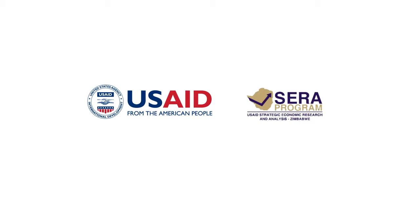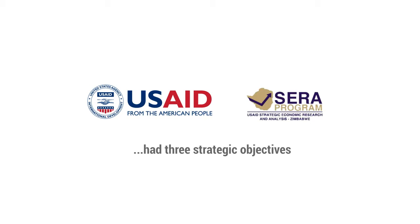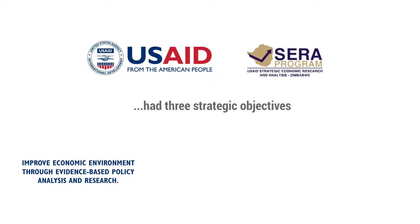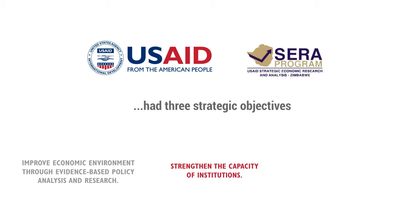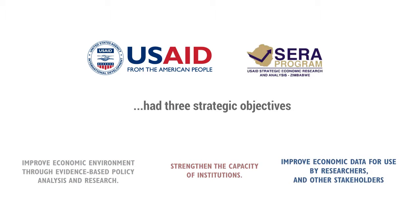USAID's Strategic Economic Research and Analysis, SARA, had three strategic objectives: to improve the economic environment for inclusive growth, to strengthen the capacity of policy development institutions, and to improve the availability of economic data.